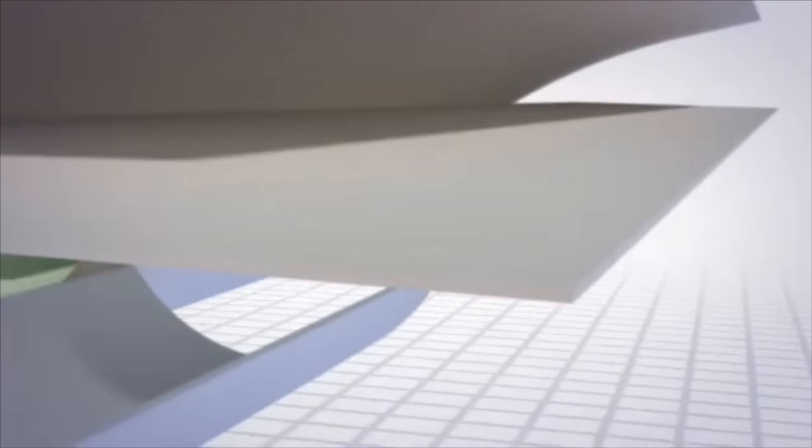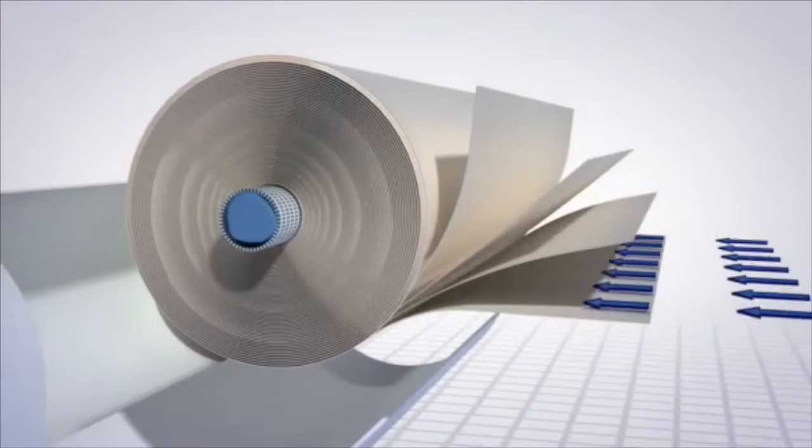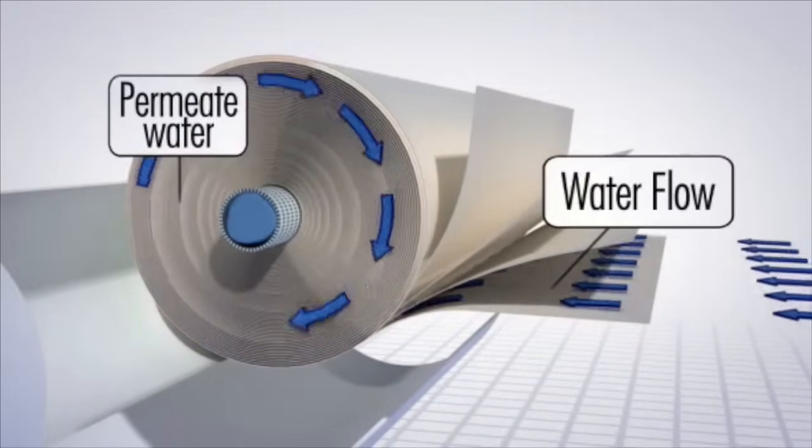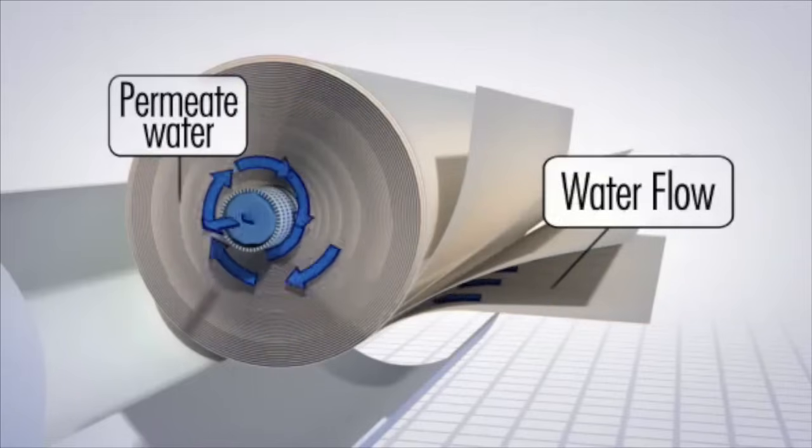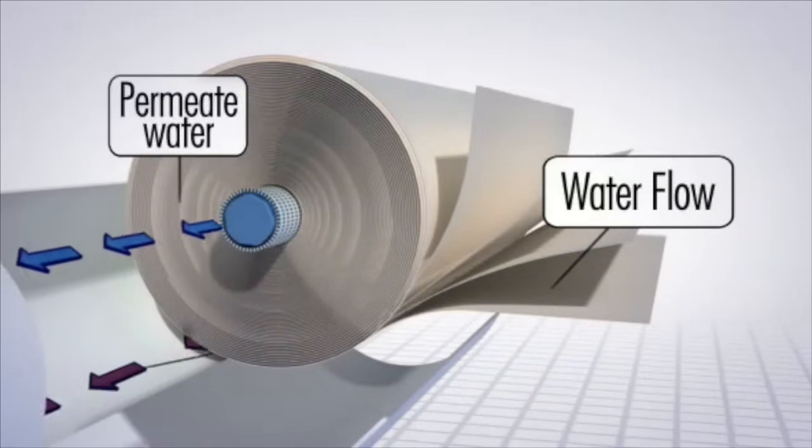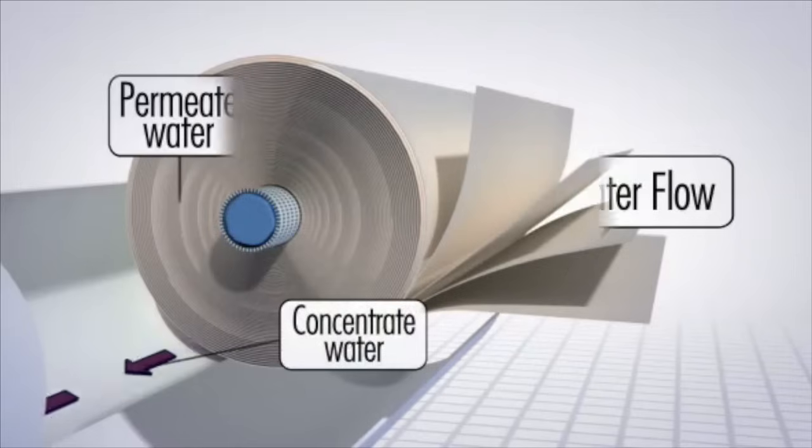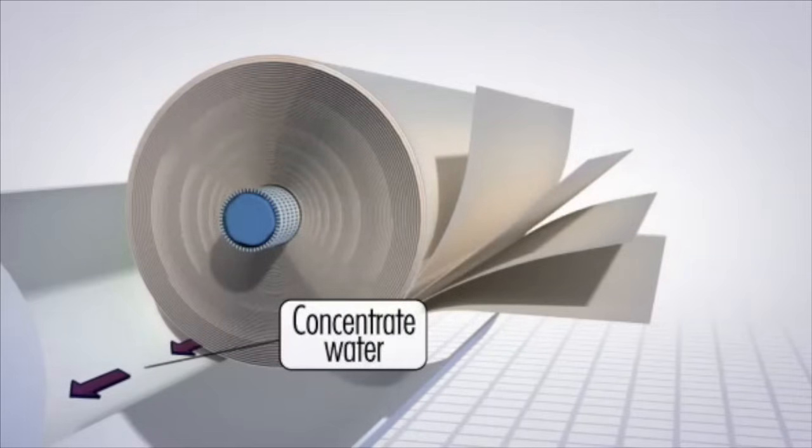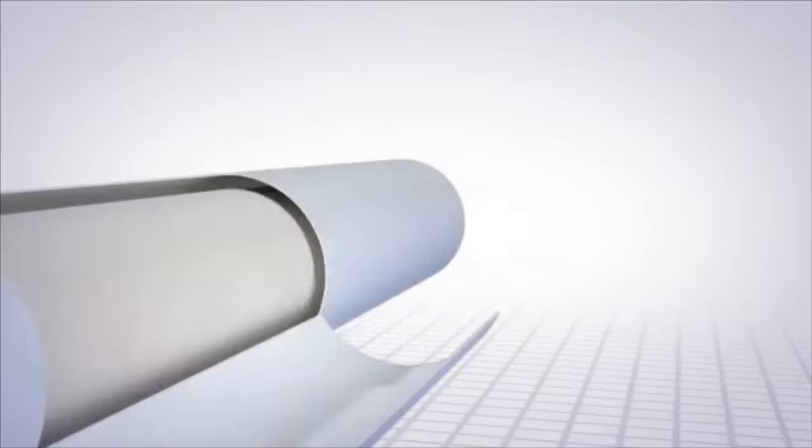Two streams of water are produced. Pure, clean water or permeate flows across the membrane sheets and passes through the membrane layers to the inside core tube. Water that does not permeate becomes more highly concentrated with salts and other substances. This water is called concentrate.